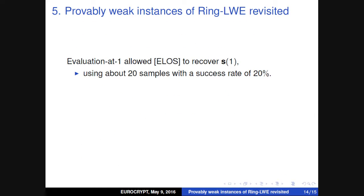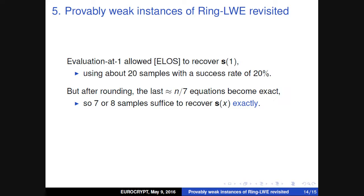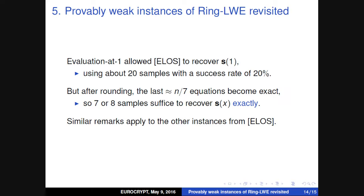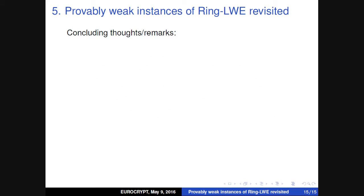Evaluation at 1 allowed these people to recover S(1), using about 20 samples with a success rate of about 20%. After rounding, the last n/7 equations roughly become exact, so with seven or eight samples you have basically enough equations to apply linear algebra, and this allows one to recover the secret exactly. Similar remarks apply to the other examples.